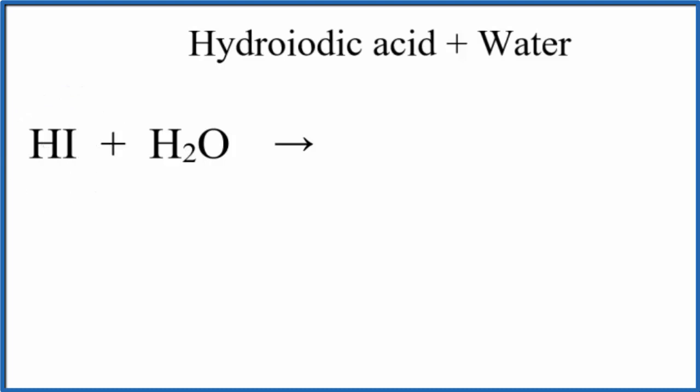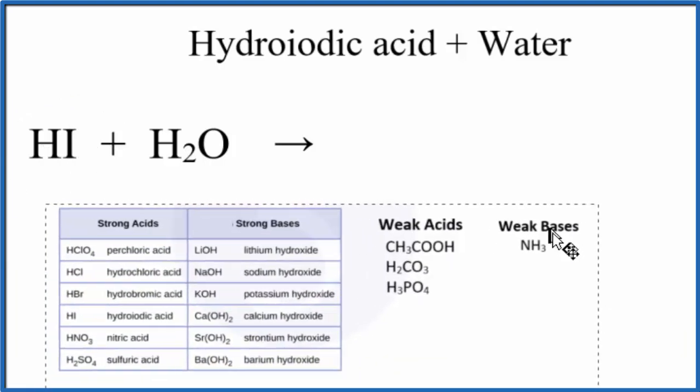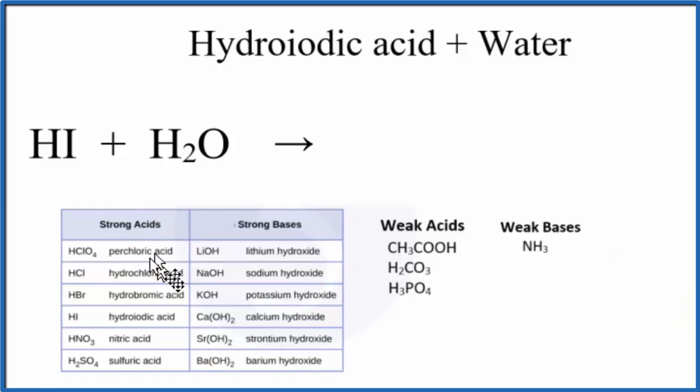For HI, you really need to memorize that it's a strong acid. So we have a list of acids here, and the strong acids right here, there's hydroiodic acid. So this is a good list to remember. If we have it on this list, it's a strong acid. Otherwise, it's usually going to be a weak acid.